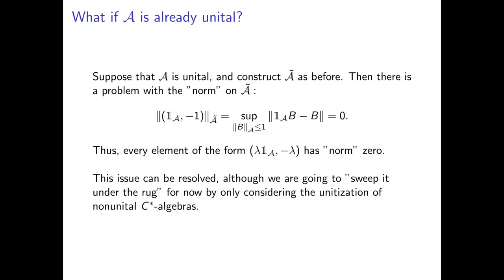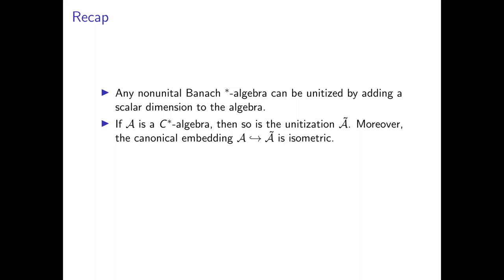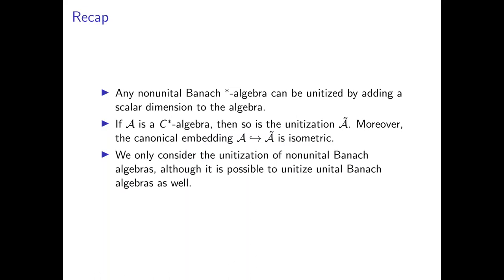To recap: any non-unital Banach-star algebra can be unitized by adding a scalar dimension to the algebra. If the original algebra A is a C-star algebra, then so is the unitization A-tilde. Moreover, the canonical embedding of A into A-tilde is an isometric embedding. In what follows, we only consider the unitization of non-unital Banach algebras, although it is possible to unitize unital ones — I'll link an interesting Math Overflow thread for those interested. Next time, we'll talk about the spectrum of Banach algebras to get some general ground to stand on.